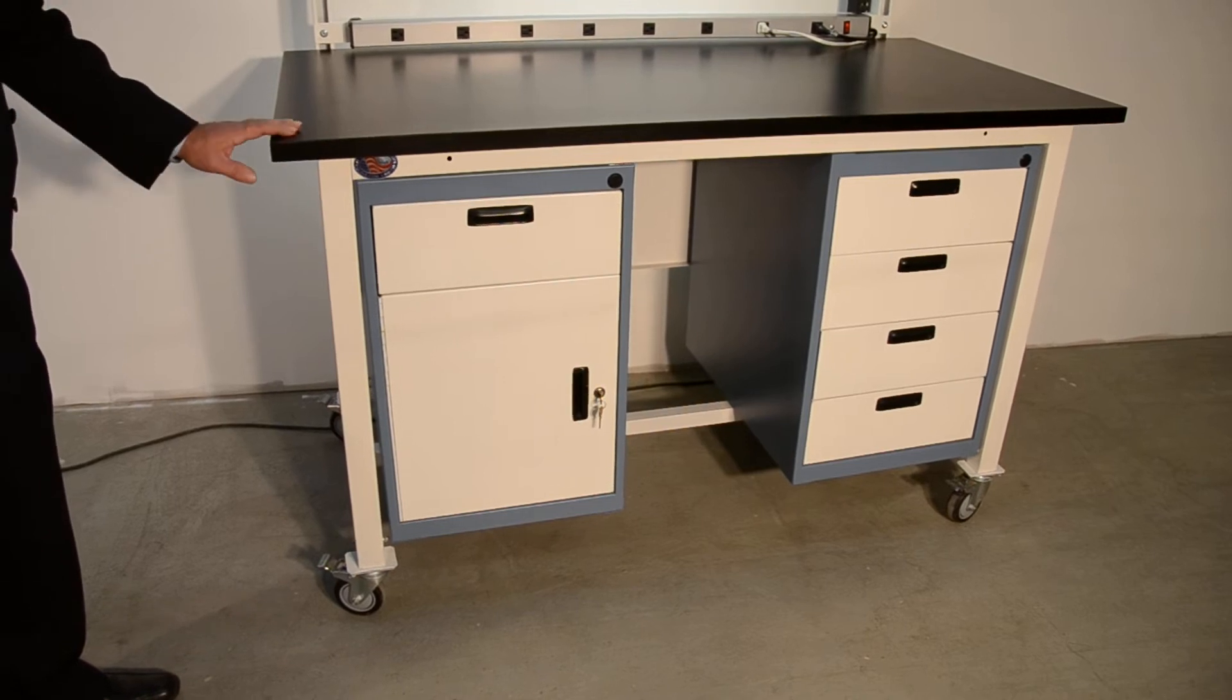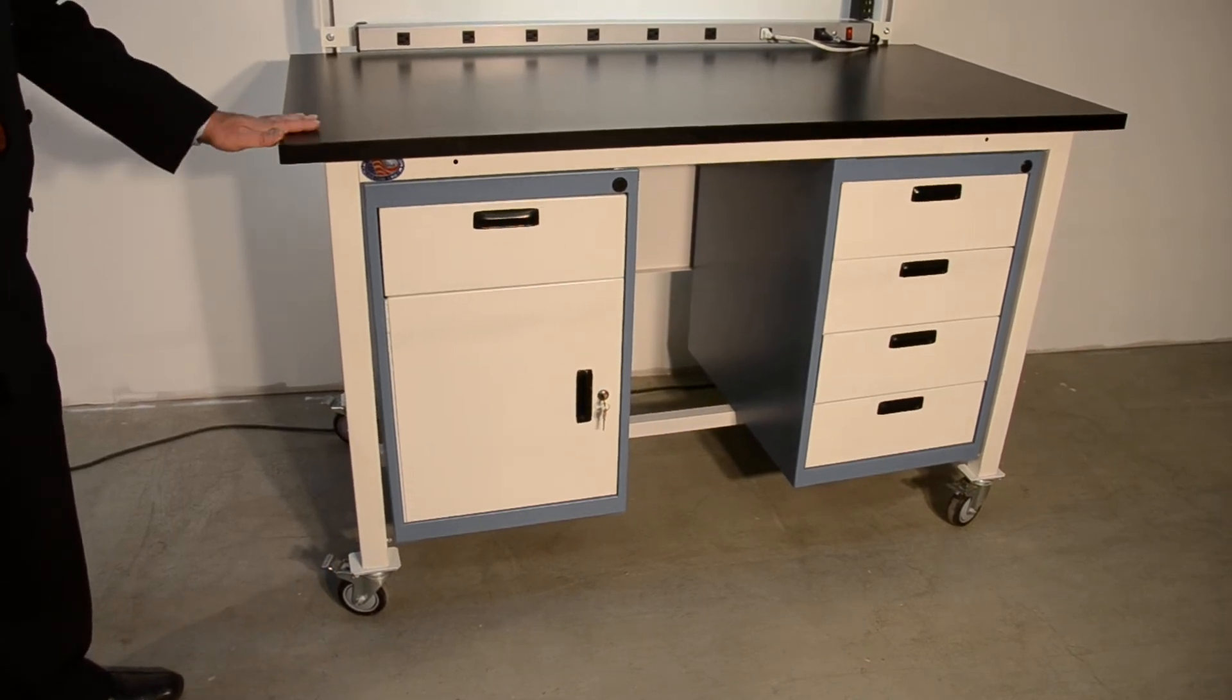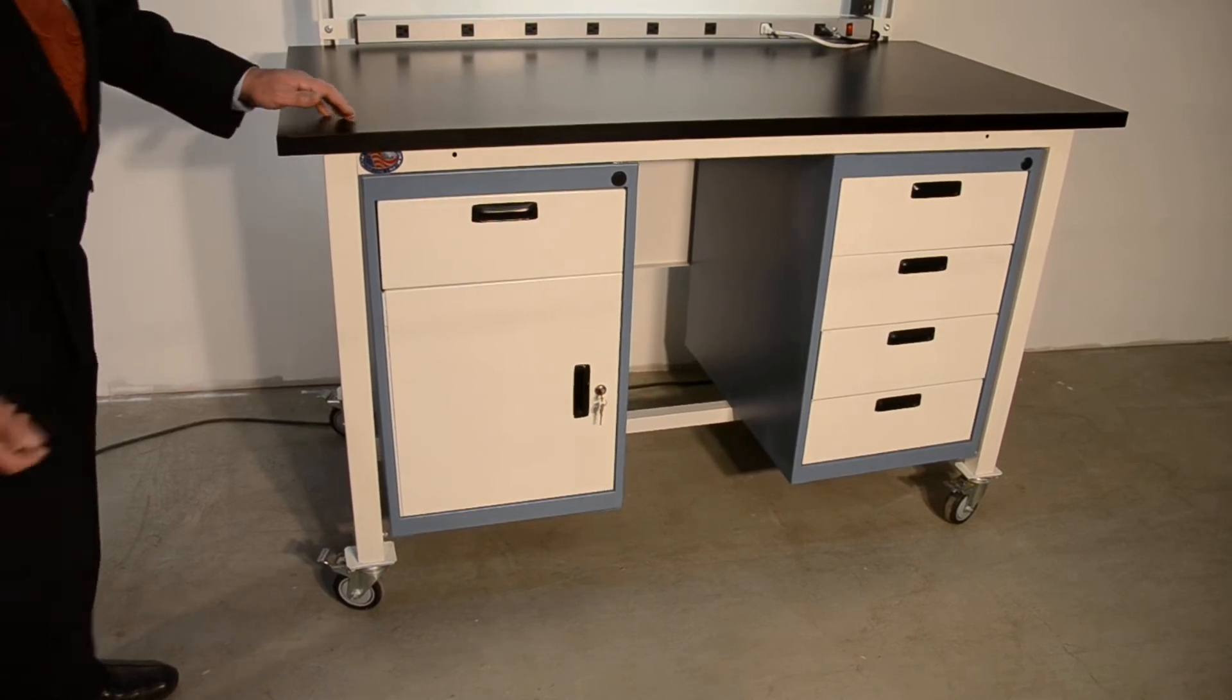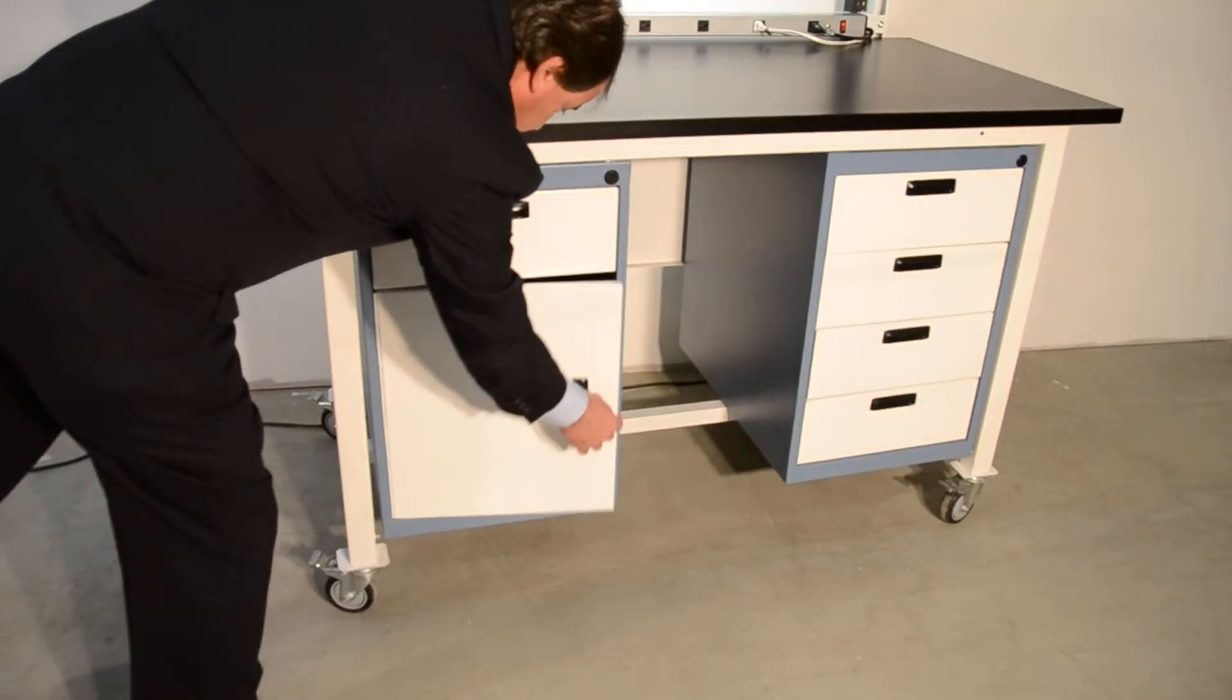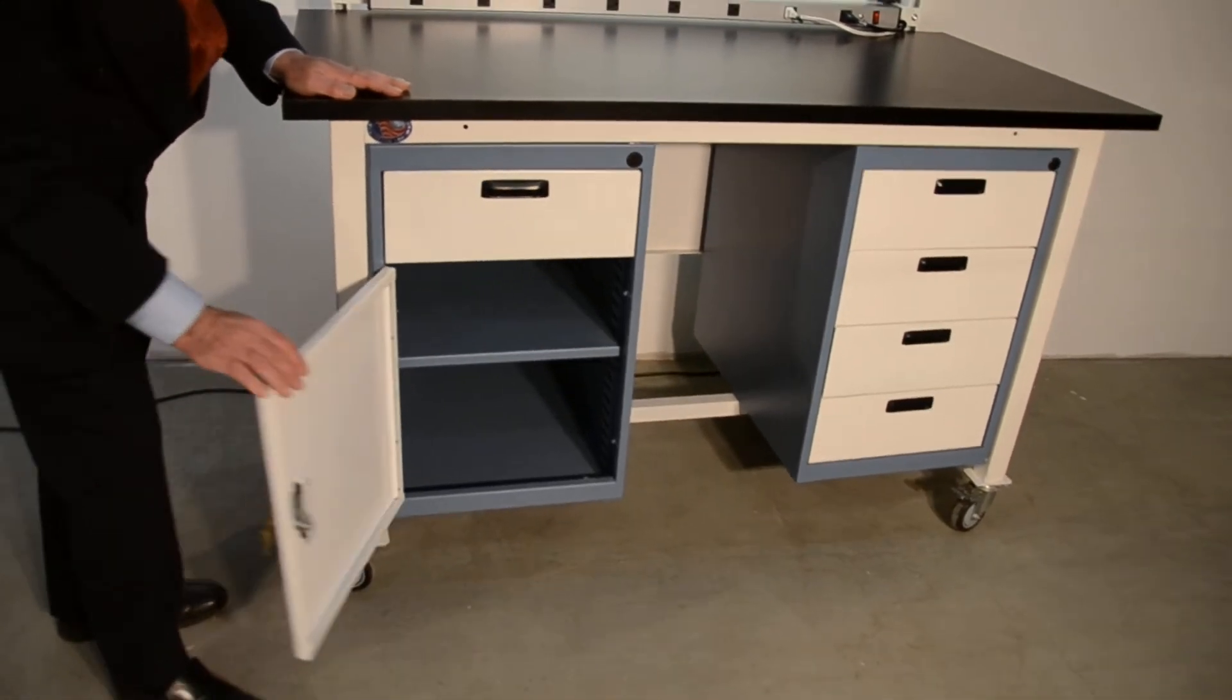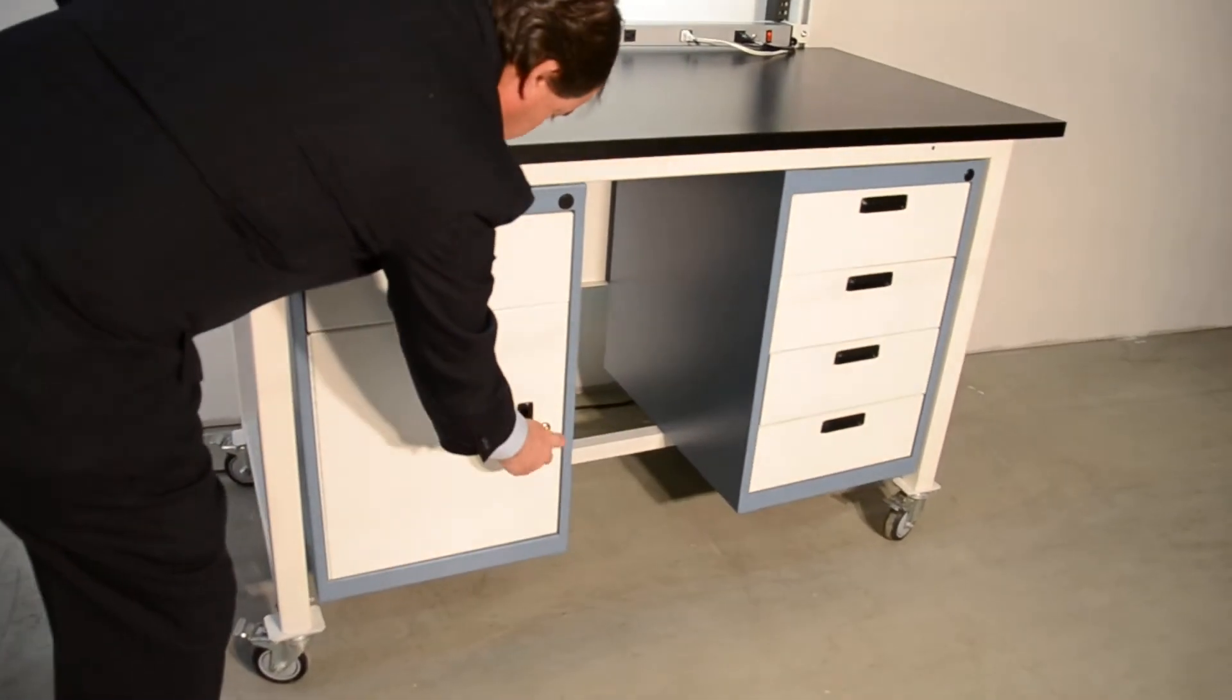As you can see, we're featuring a two-tone, textured white, textured blue on this. Recessed handles, swing door with lock. There is an adjustable shelf inside that can be set anywhere on one inch increments. The lock is included in the price of the cabinet.